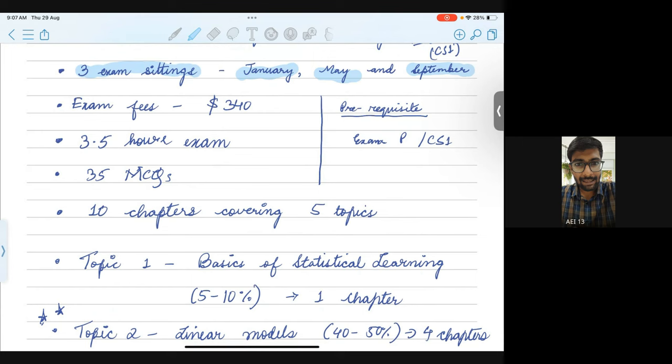Now, what is the exam fees? The exam fees is $340. So this is for non-students. And if you are a student and it's verified by the institute SOA, then there is a 20% reduced fee that is applicable, which would mean you will have to pay $68 less.